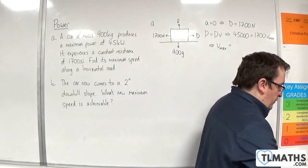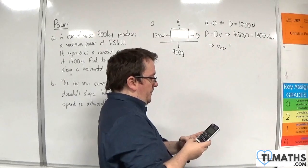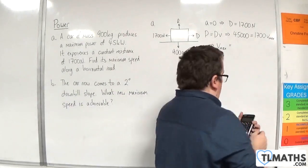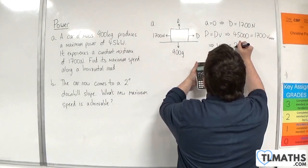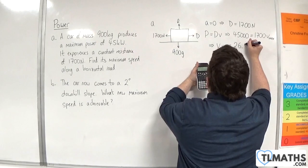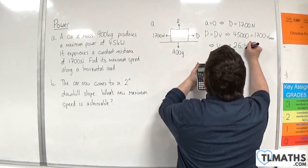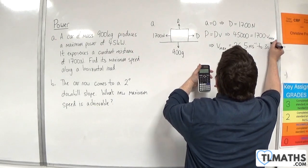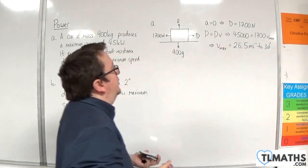So, 45,000 divided by 1,700. And so that is 26.4705, so 26.5 meters per second to three significant figures.